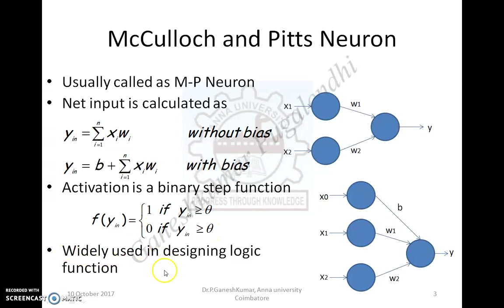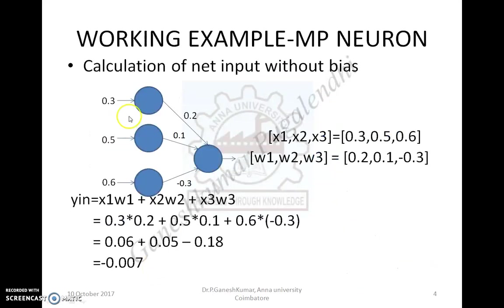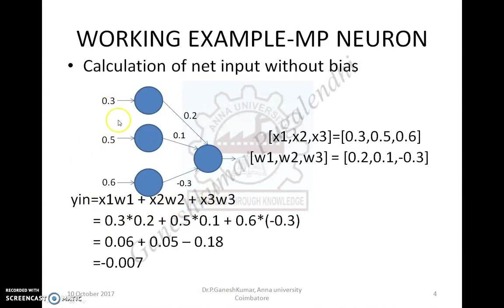This kind of model is widely used in designing logic functions. Here is a simple working example for the MP neuron model. You will be provided with the architecture with input values and weight values, and you are asked to calculate the net input. This architecture is without bias, so the formula is Y_in = x1*w1 + x2*w2 + x3*w3. Upon substituting the values of x and w and doing the calculation, you will get the net input.